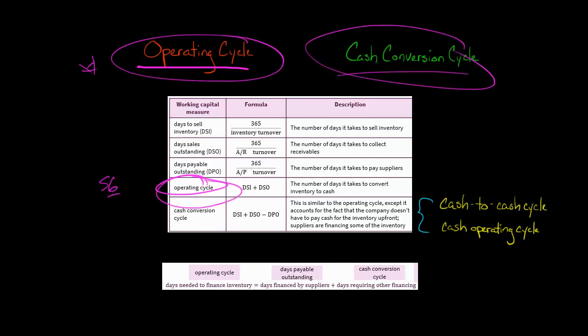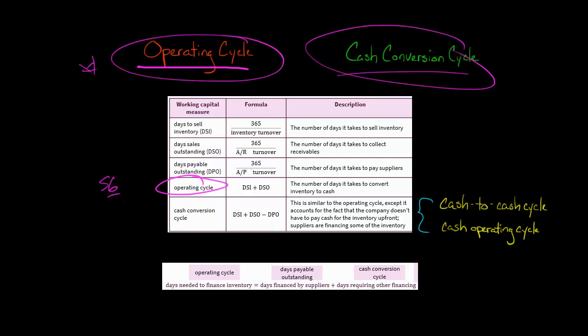The operating cycle is also the total number of days that this company needs to finance its inventory. Because when they get the inventory, they don't immediately convert it to cash — they have to sell the inventory, and then bill the customer and get the cash. So in this case, it would be 56 days before they get any cash from the customer, and they need to somehow finance that inventory during that time period.